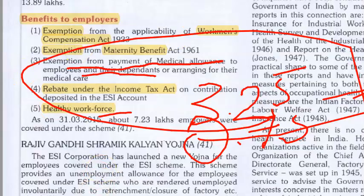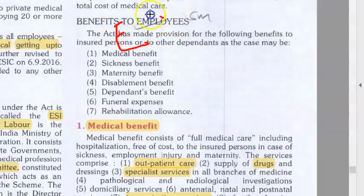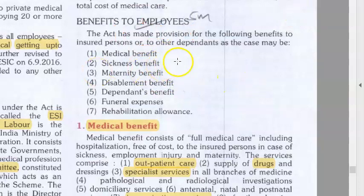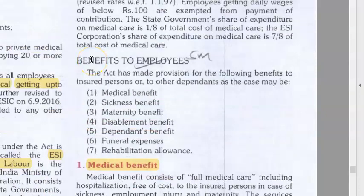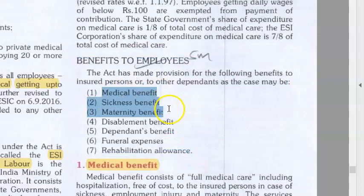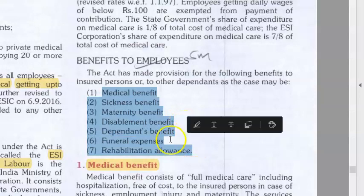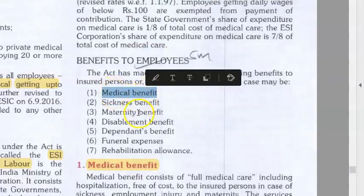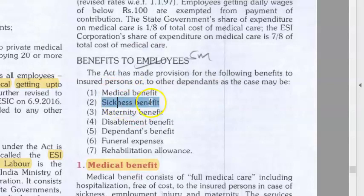Let's close this video on ESI Act. It comes under the ESI Corporation and Union Ministry of Labor. It covers all power-using factories with 10 or more persons, shops, hotels, restaurants, cinemas, theatres, road motor transport, newspaper establishments, etc. Benefits to employees: medical, sickness, maternity, disablement, dependent benefit, funeral expenses, and rehabilitation. Medical benefit includes direct and indirect delivery, outpatient, inpatient, specialties, emergency, ambulance, etc.